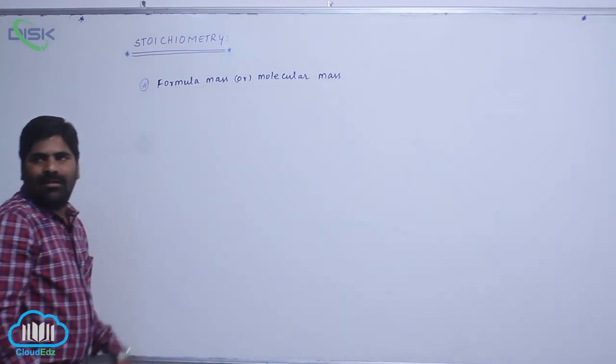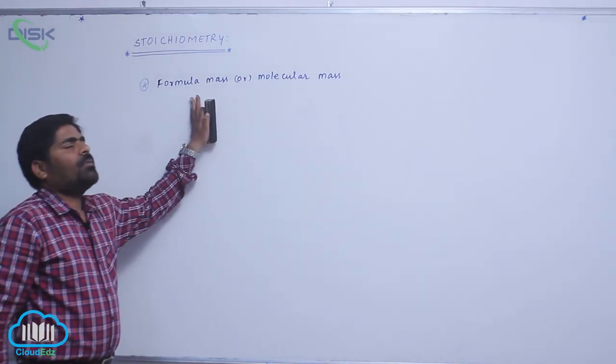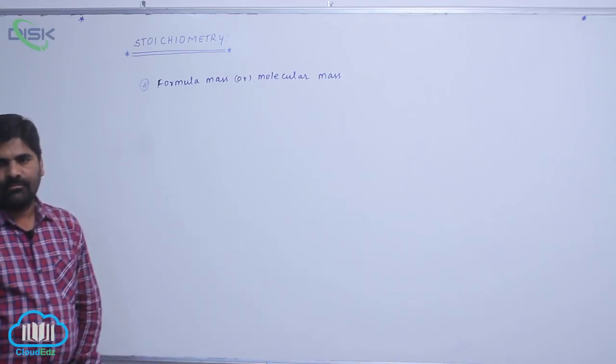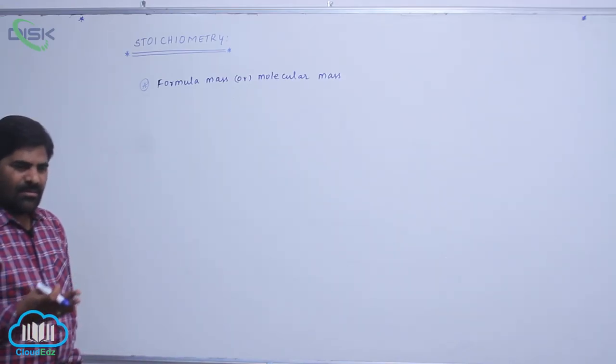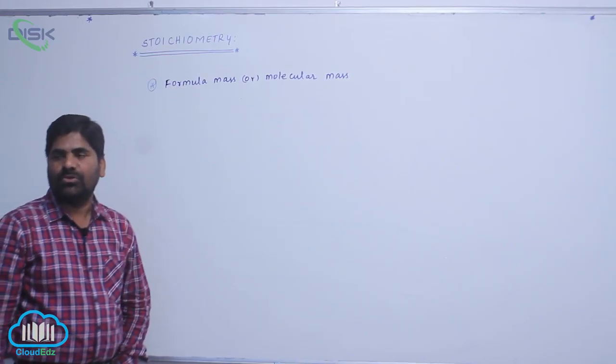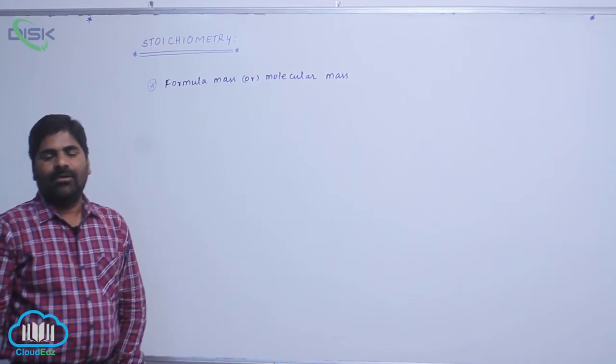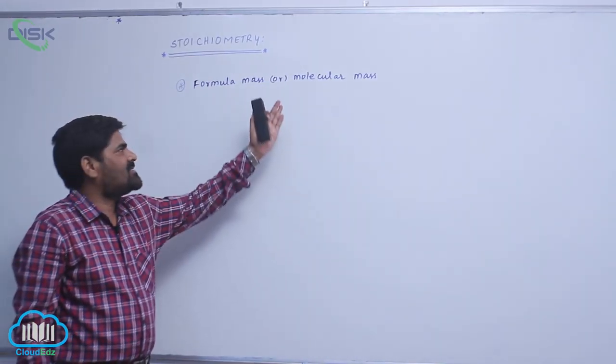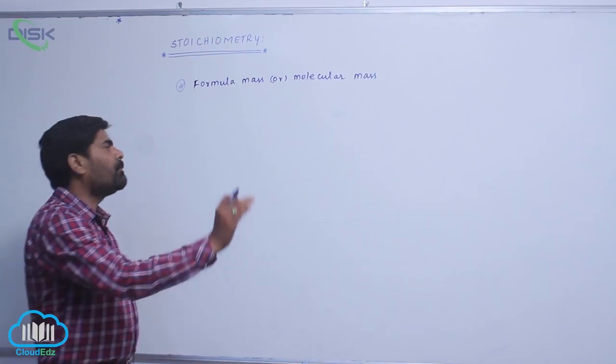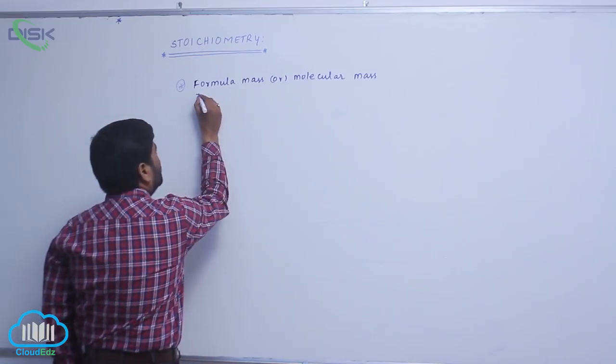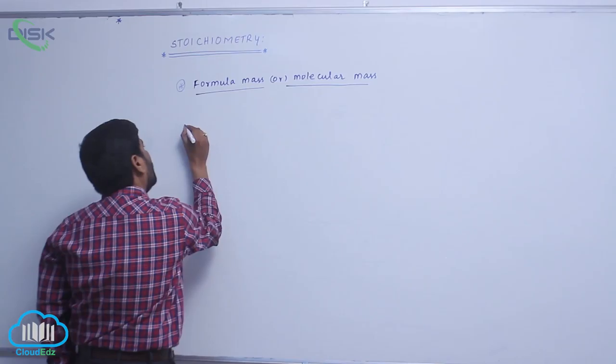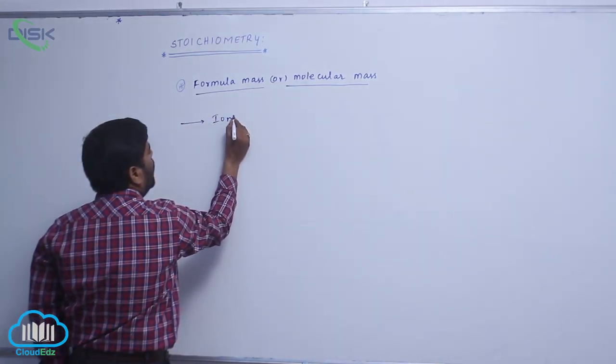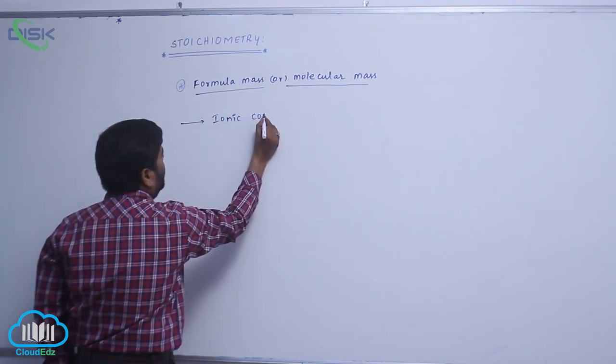Generally, this term formula mass is mainly used for ionic compounds because ionic compounds are easily dissociated into corresponding ions. That is the reason why formula mass is taken as molecular mass. This particular term is mainly used for ionic compounds.